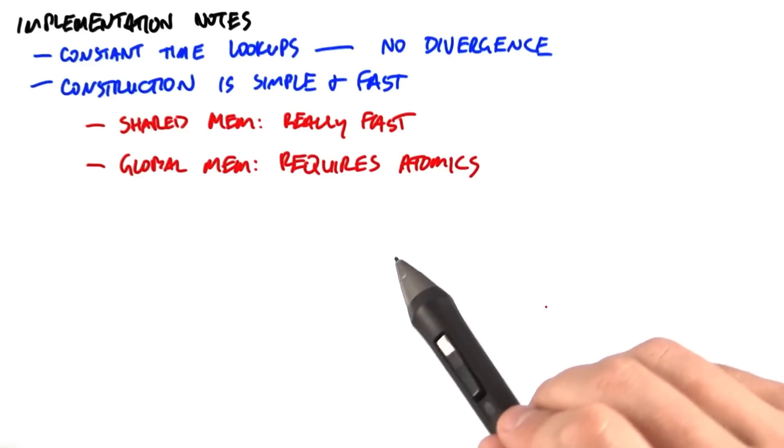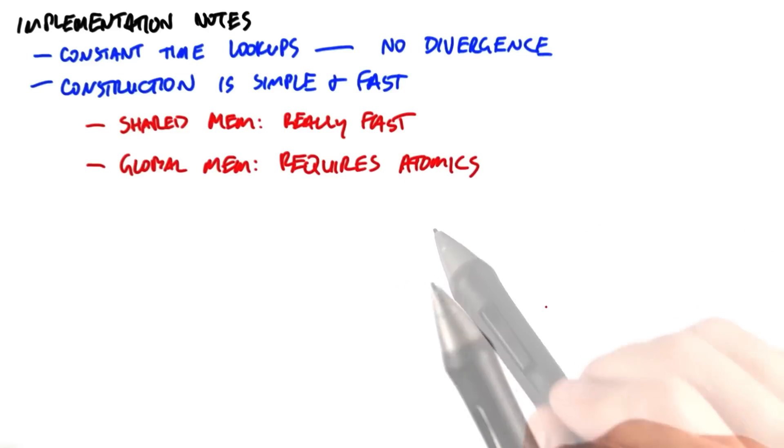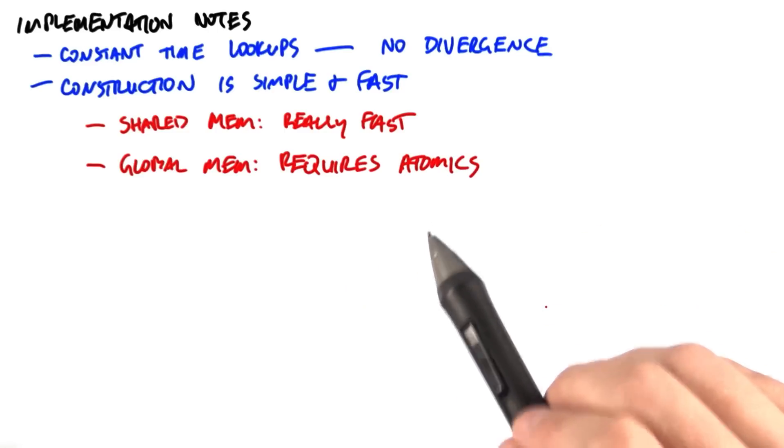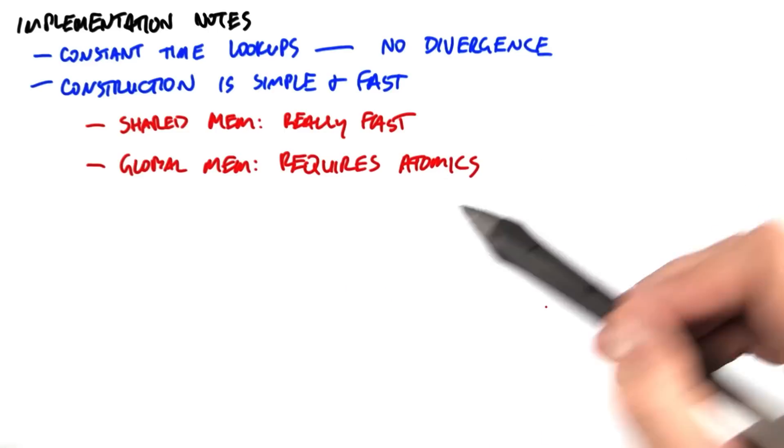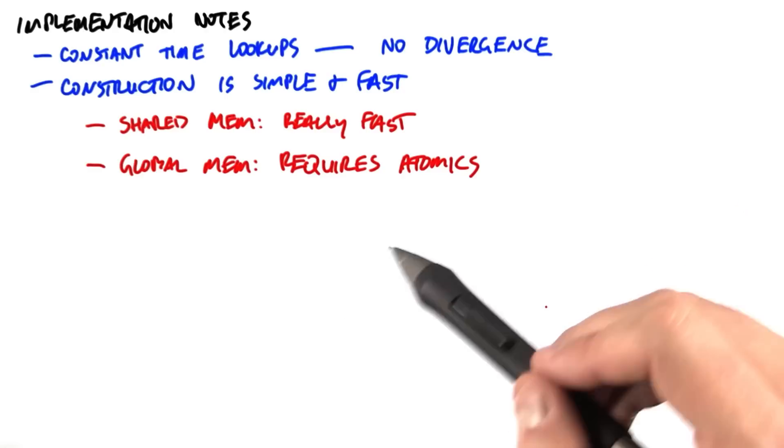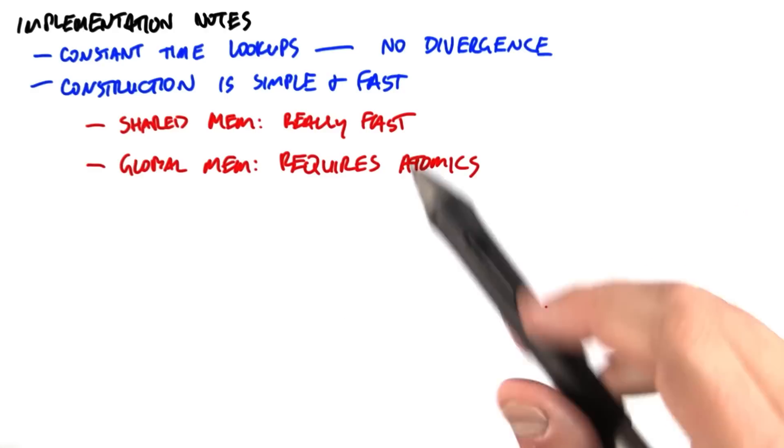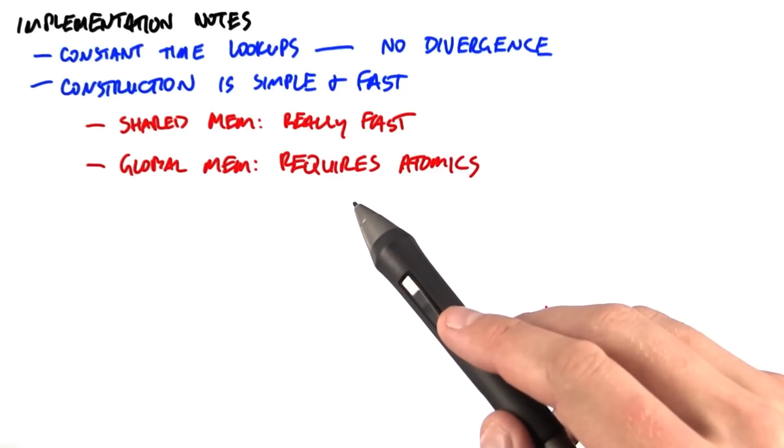And the construction algorithm is actually pretty simple and pretty fast. It's a very efficient hash table construction when it's done in shared memory with a small set of items to hash. But it turns out that it actually works fairly well with large data sets when the hash table needs to be constructed in main memory.